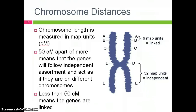This map unit distance also correlates directly with the probability of linkage. The map unit distance corresponds to the probability that the genes will assort independently. For example, a map unit distance of 25 means there is a 25% chance that the genes will assort independently.